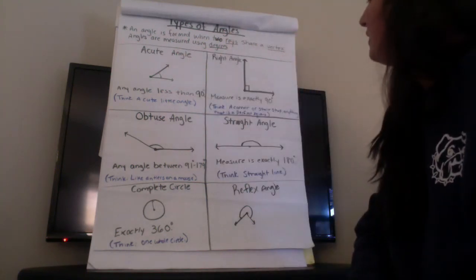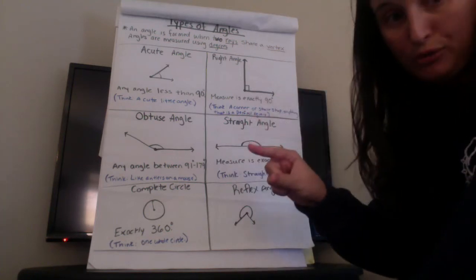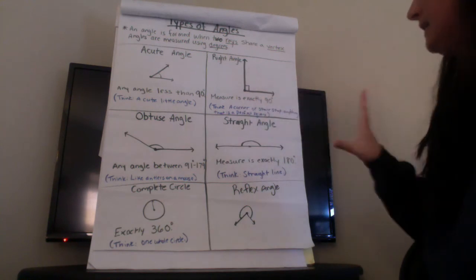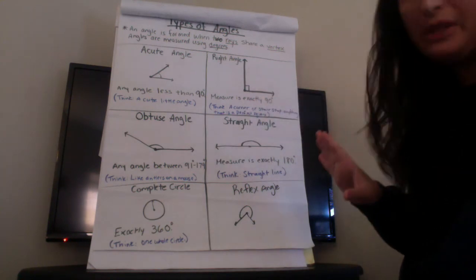All right so we have acute angle, small cute, less than 90 degrees. Right angle exactly 90 degrees, think of it like a corner or a perfect square.